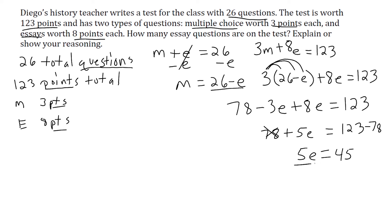To show the work completely, when you have a coefficient you divide both sides by that coefficient — sometimes teachers need to see every step. So 5E divided by 5 equals 45 divided by 5, giving E equals 9. This answers the question: how many essay questions are on the test? The answer is 9.